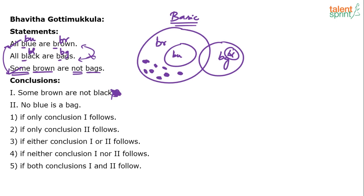There can be multiple possible diagrams — 4, 5, 10, 15, 20 different types. So instead of drawing all of them, try a smart method. For this conclusion to be false, its complementary — all browns are black — has to be true. This is the concept of complementary pairs. There are two types: some A's are B's and no A's are B is the first pair; all A's are B's and some A's are not B's is the second pair.